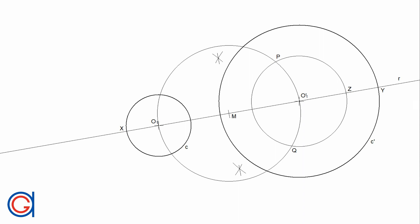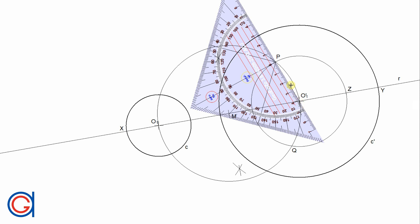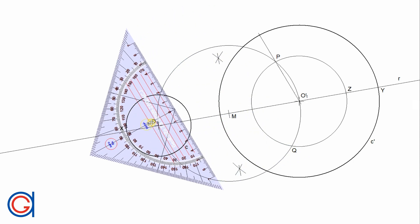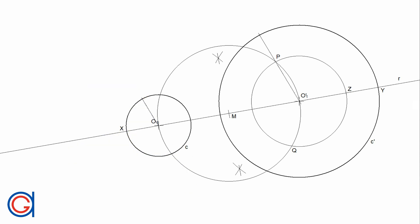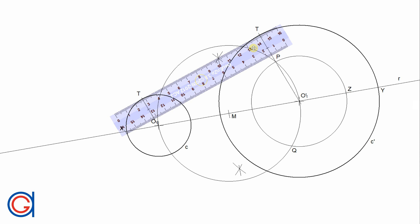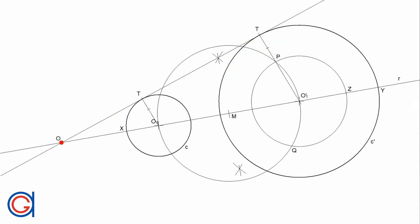The next step is to draw a line from O prime 1 through point P and elongate it until it touches the original circle C prime at a new point, which will be the tangent point T. Now we draw a parallel line to this line from point O1, getting our second tangent point T. The next step is to draw the tangent line S, connecting both tangent points and elongating it until it cuts line R. Where it cuts line R will be the center point O of the mid-circle we want to draw, highlighted here in red.